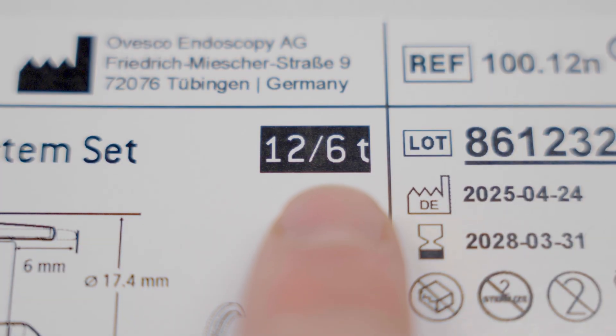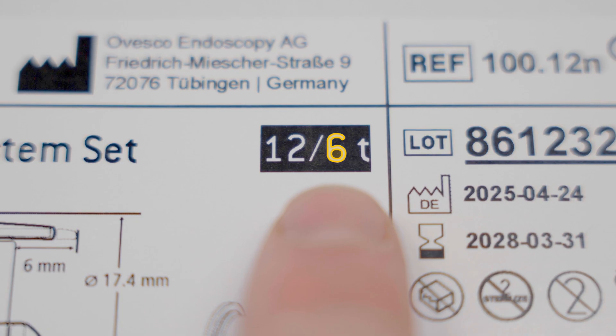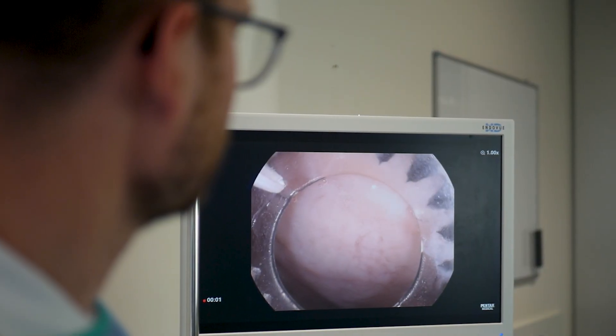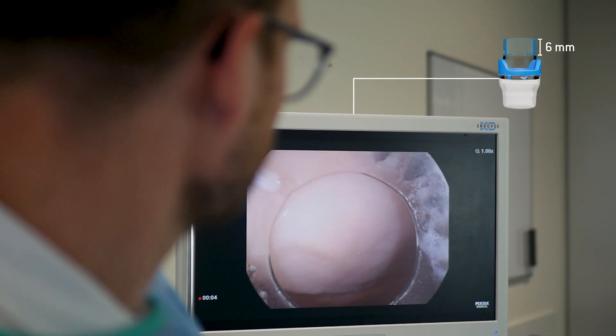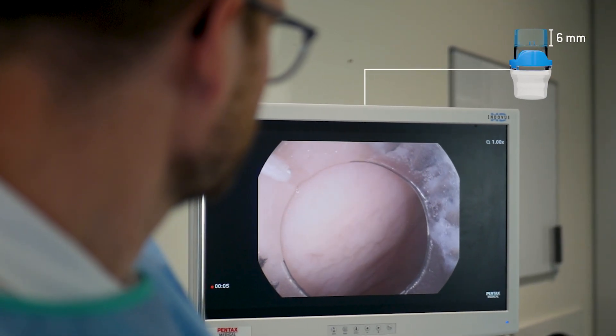The second number indicates the cap depth. The variant with a 6 mm cap depth allows the mobilization of a larger amount of tissue and is universally applicable, but may slightly restrict visibility.